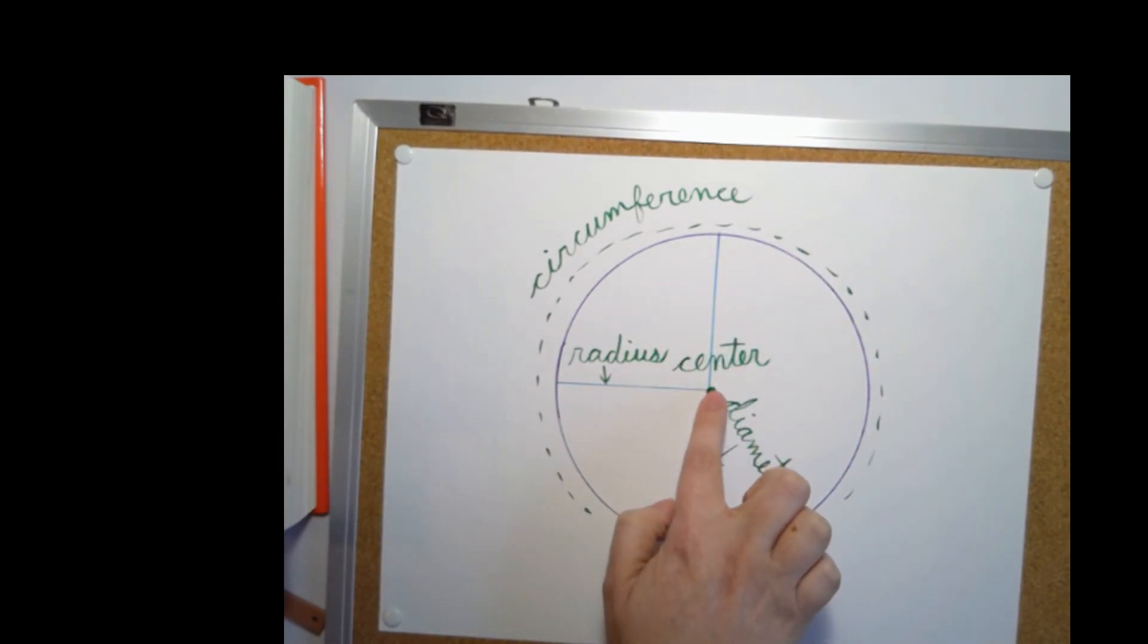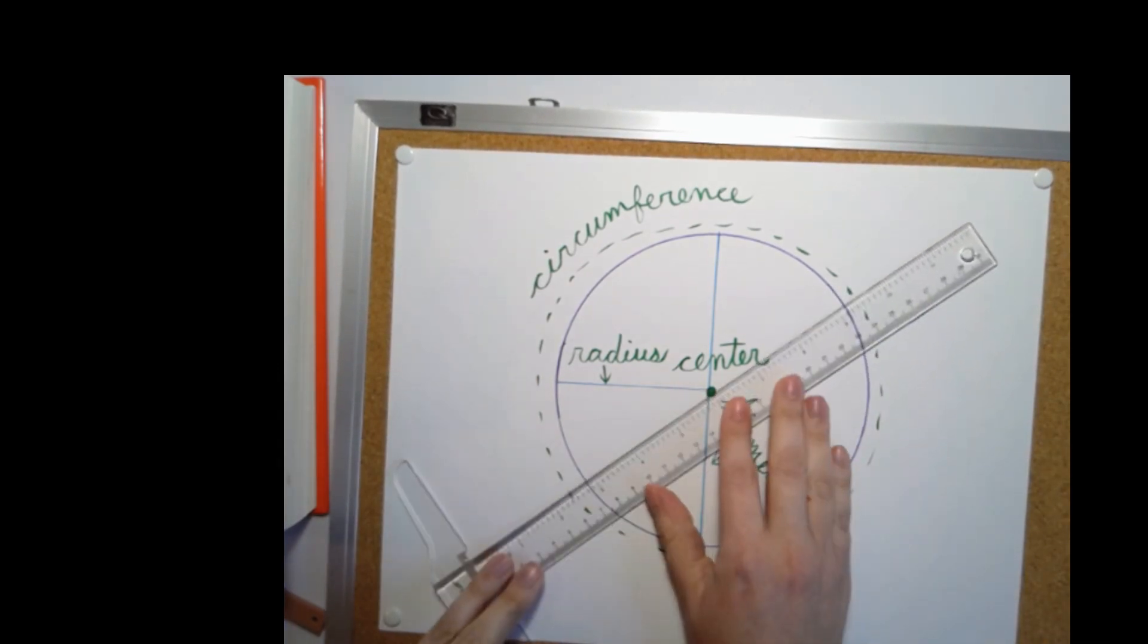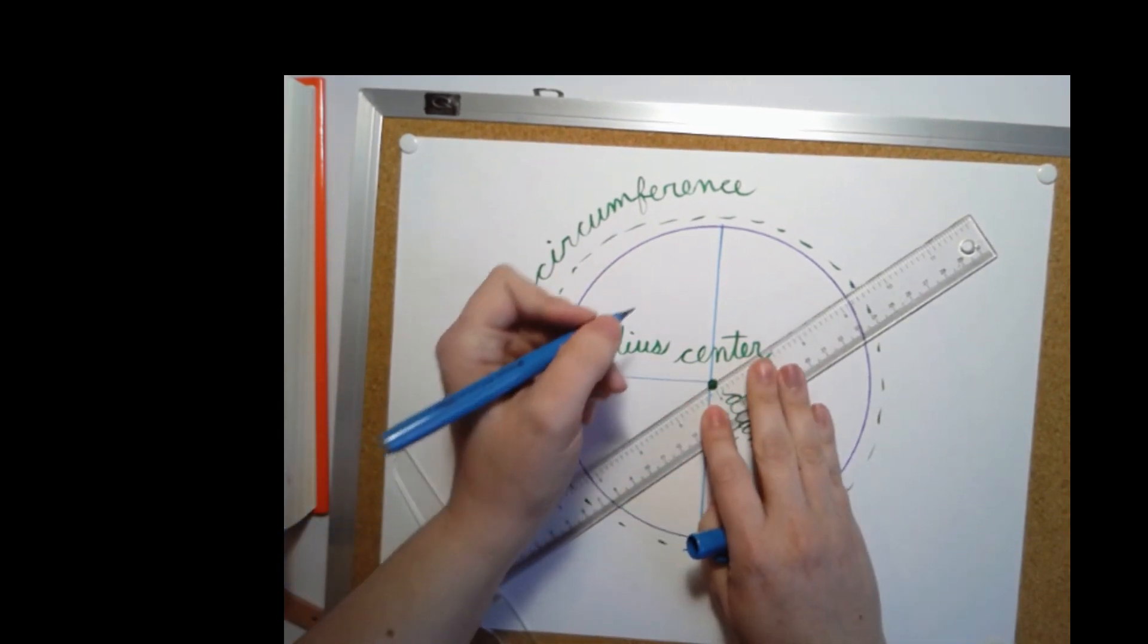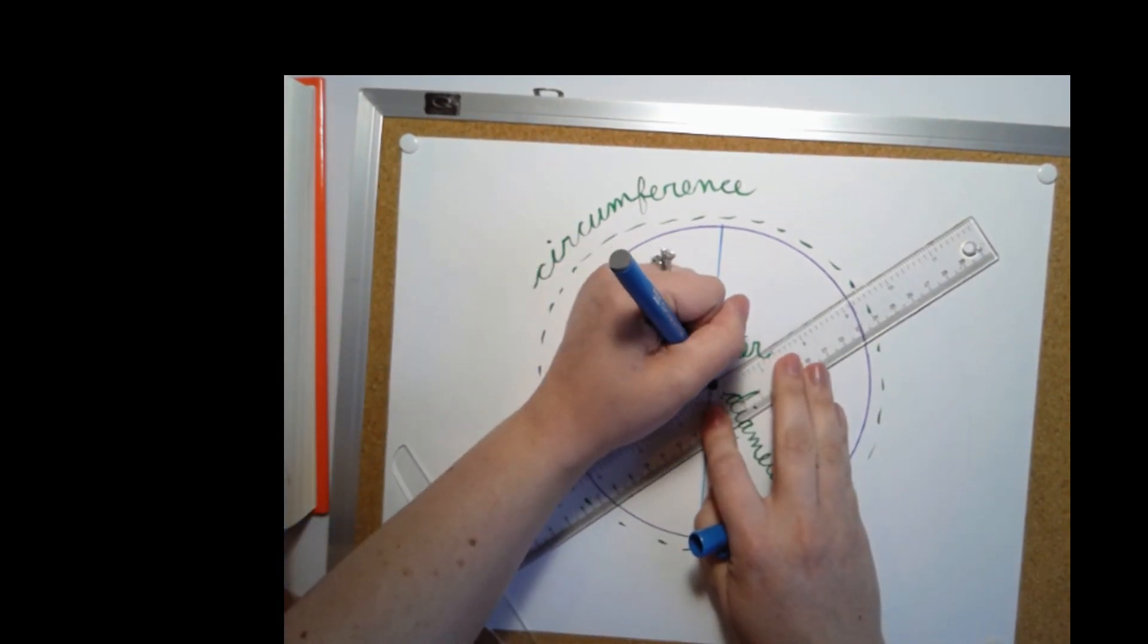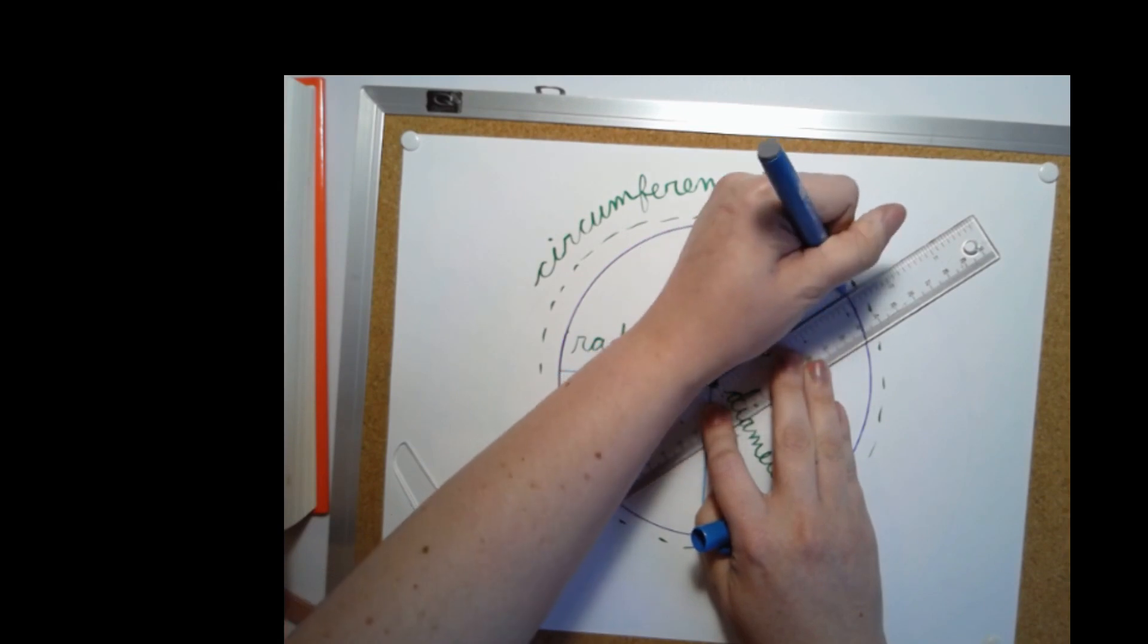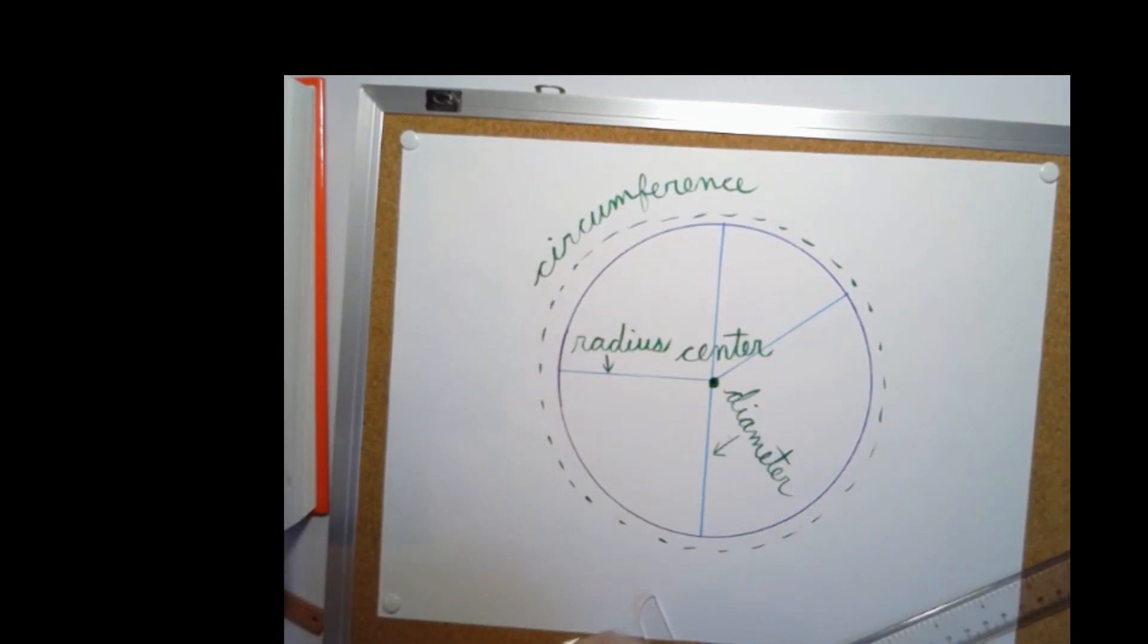Because we could have a radius going from here. We could have one going here. Here, this is also a radius. Okay, so you could draw as many radiuses as you would like.